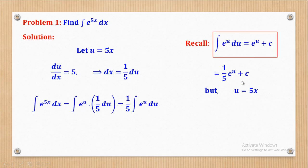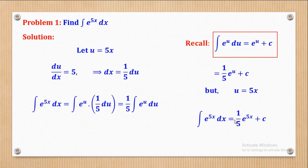Remember, we introduced u ourselves, so we have to eliminate it by recalling that u = 5x. Substituting back, we get the integral of e^(5x) with respect to x equal to (1/5)e^(5x) plus the constant of integration.